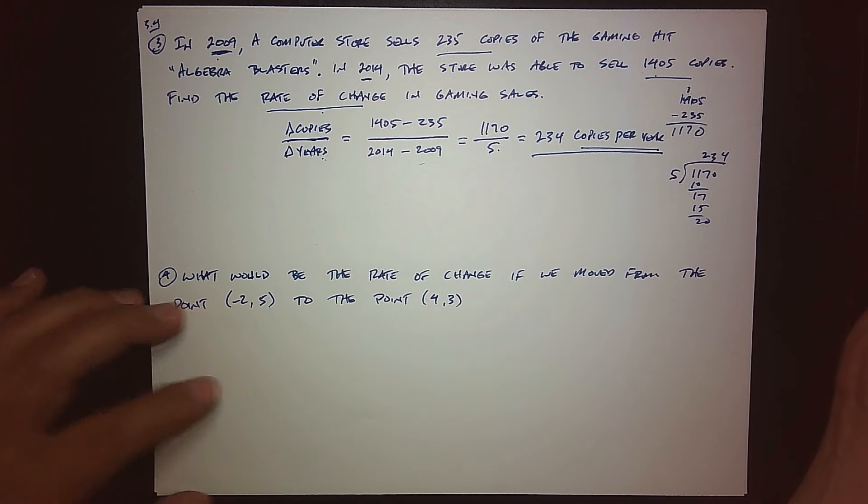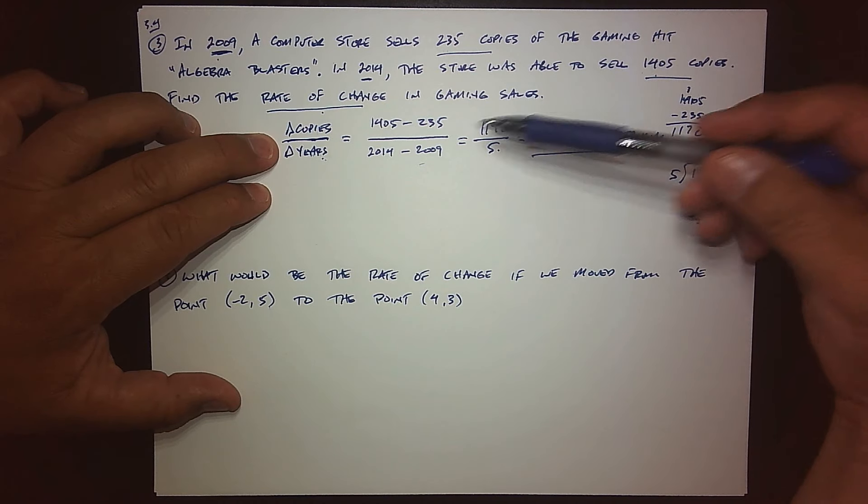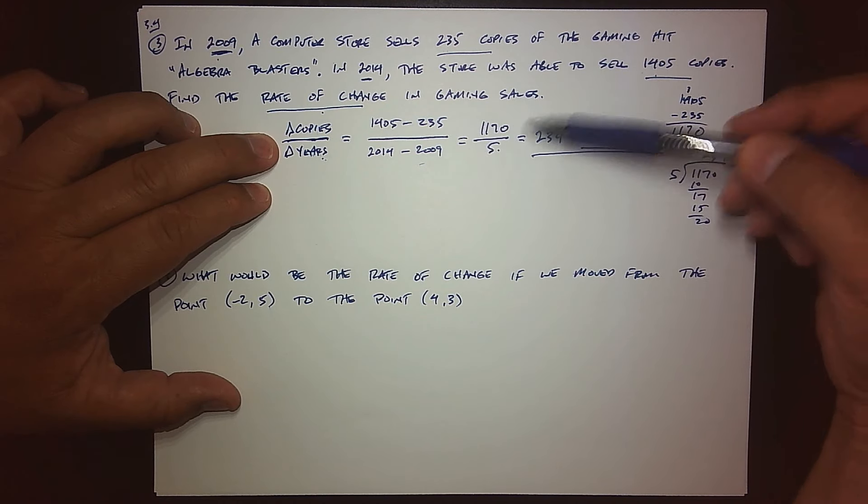So you can kind of see I'm still doing my word problem situation. We identify the unknowns, we set up, in this case, a ratio. It's not really an equation. We start plugging some things in, do our calculation, and then get our units right. So for this situation, basically it's saying that every year, there's a jump in 234 copies of this game. And assuming that rate stays, we can even start calculating how many copies they sold in 2020. But we won't do that. We're just concentrating on finding the rate of change for a certain situation. So again, identify your rate, find those two changing quantities, do the math, get your units right.